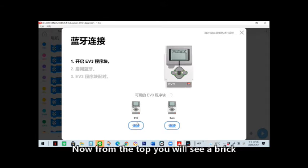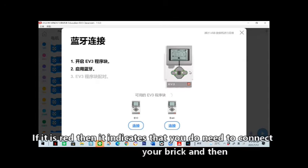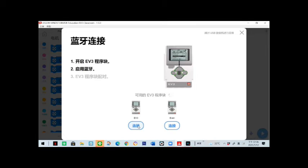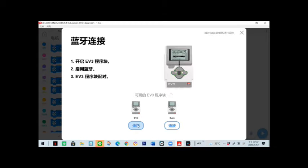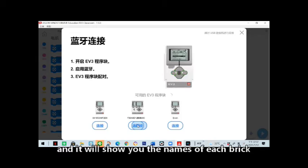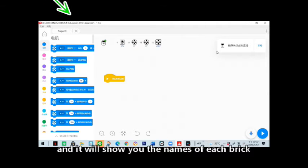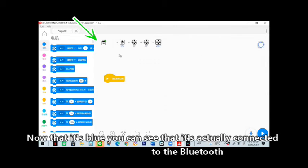Now from the top you will see a brick picture, and if it is red then it indicates that you do need to connect your brick. Then it will teach you how to connect to the Bluetooth function of the brick, and if you don't want to then it is okay. As you can see there are multiple bricks here and it will show you the names of each brick. Now that it's blue, you can see that it's actually connected to the Bluetooth.